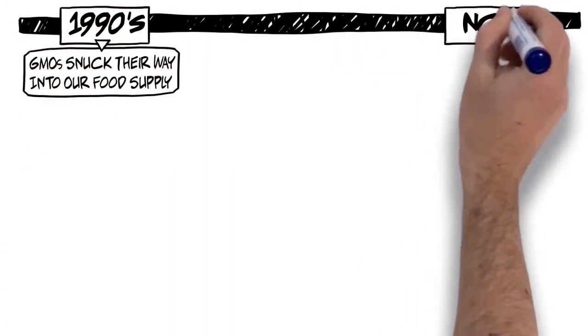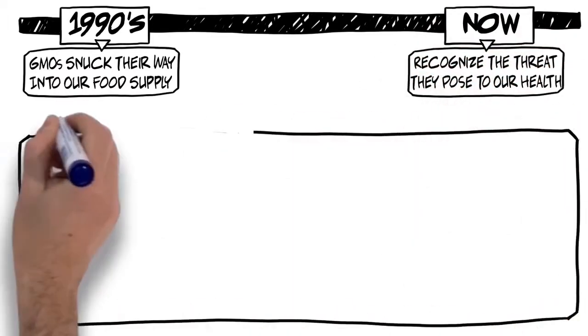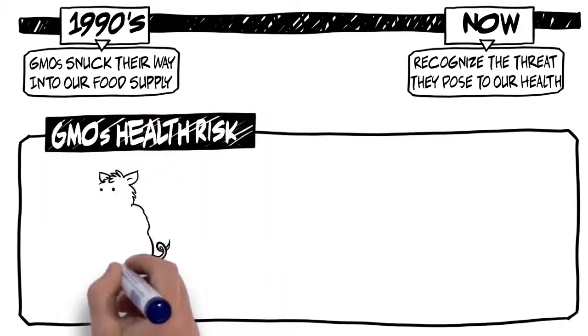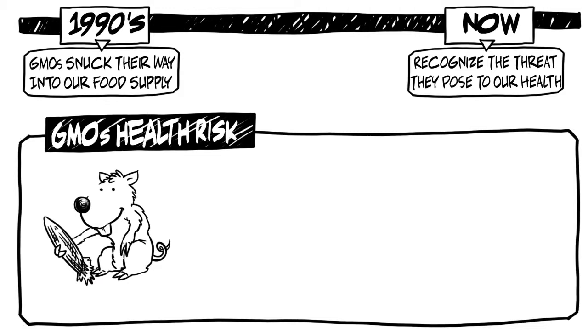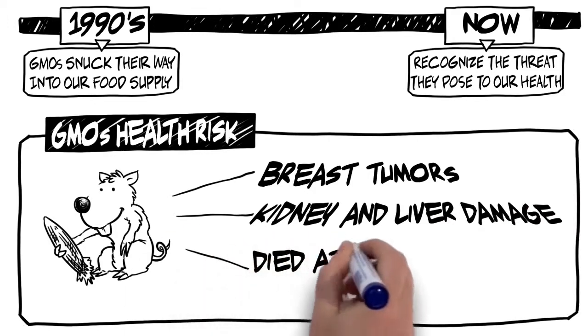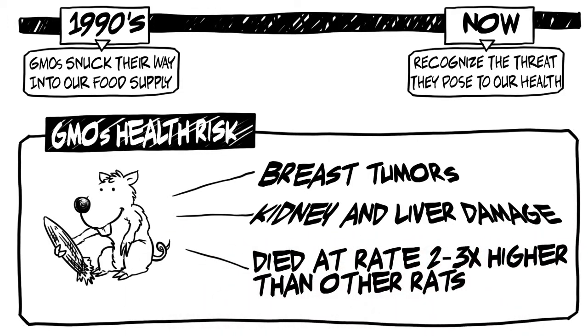A two-year-long French study designed to evaluate the health risks of genetically modified foods found that rats fed genetically modified corn developed massive breast tumors, kidney and liver damage, and died at a rate two to three times higher than rats not fed genetically modified corn.